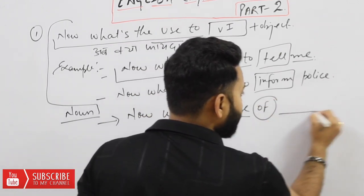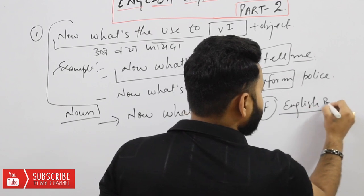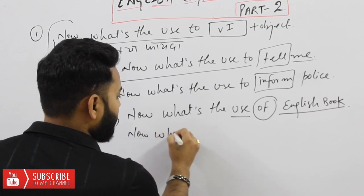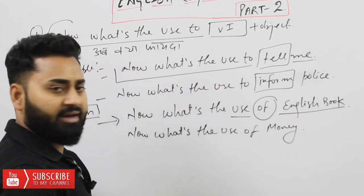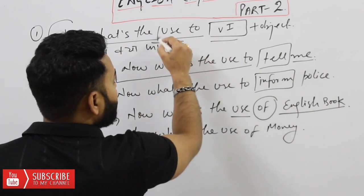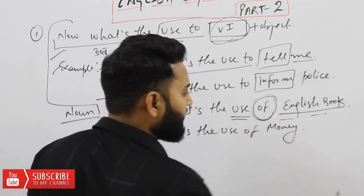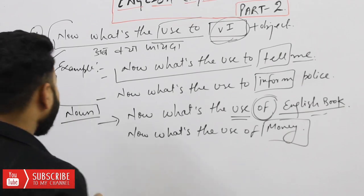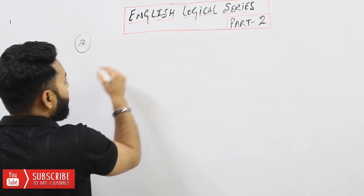अगर noun मिलता है तो 'What's the use' के आगे 'to' नहीं लगाना, बल्कि 'of' लगाना है, फिर जो भी आपका noun होगा। Example: 'Now what's the use of English book?' — यानि अब English book का क्या फाइदा। Another example: 'Now what's the use of money?' — यानि अब पैसे का क्या फाइदा। अगर verb है तो 'to' लगाएं; अगर noun है तो 'of' लगाएं।